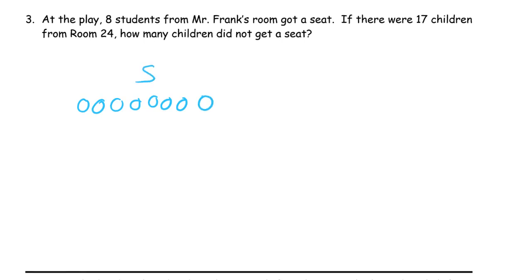And these are the students who got a seat for Mr. Frank's room. There's 8 of them. And there were some children who did not get a seat. Right? We don't know how many there are. N for no seat. But we know there's a total of 17, right? So if that's 8, then 9, 10, 11, 12, 13, 14, 15, 16, 17.